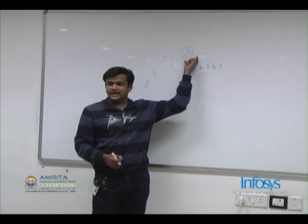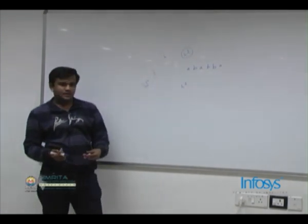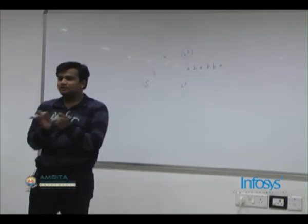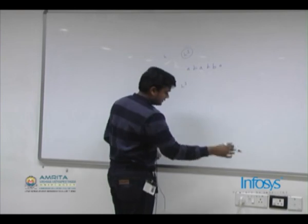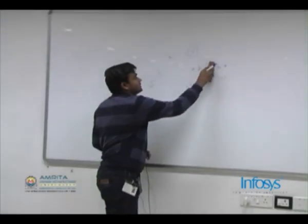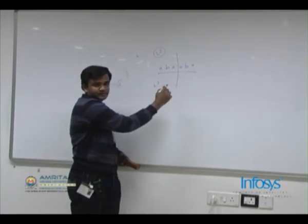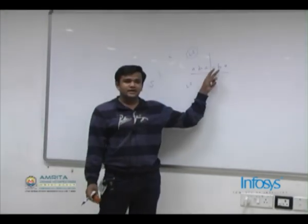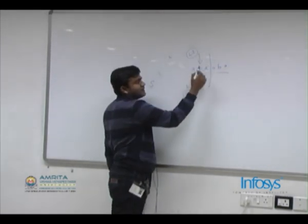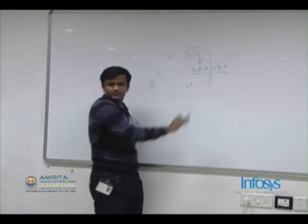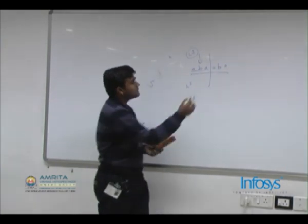To optimize, observe that every palindromic substring is characterized by its center. If the palindrome has odd length, like 'aba', it's centered at a single index. If it has even length, the center lies between two indices. So instead of checking all n² substrings, we iterate over each possible center point — there are 2n−1 such centers (n for odd-length, n−1 for even-length palindromes).